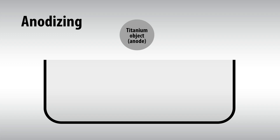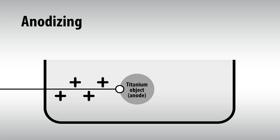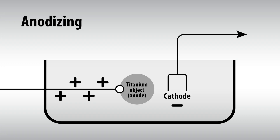That raw titanium part is submerged in an electrolyte bath using phosphoric acid or sulfuric acid. The part is connected to the positive terminal of a power supply and it becomes the anode — that's why it's called anodizing. A controlled DC voltage is applied between the part and a negatively charged cathode in the bath. That voltage drives oxygen ions into the surface of the metal, growing a transparent oxide layer at a very predictable rate.